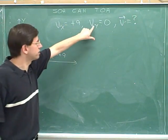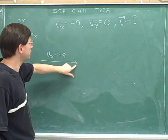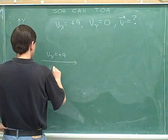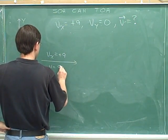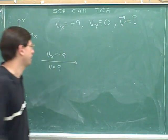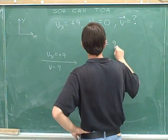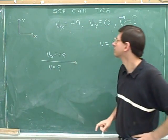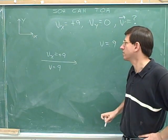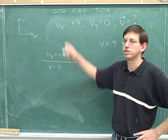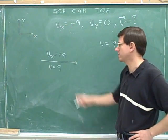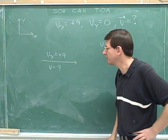There is no y component, so this also represents the overall vector. This is also the overall vector, so the overall vector has a magnitude of 9. If there's no y component, then the magnitude of the overall vector is just the magnitude of the x component. So clearly this overall vector just has a length of 9.